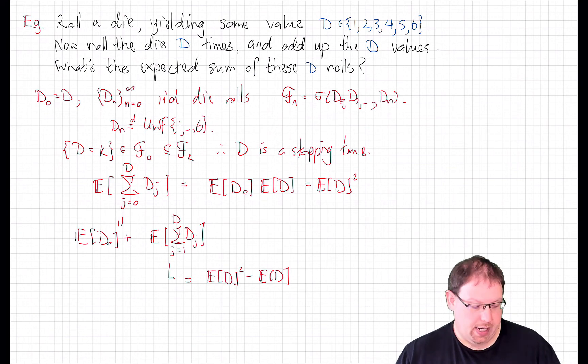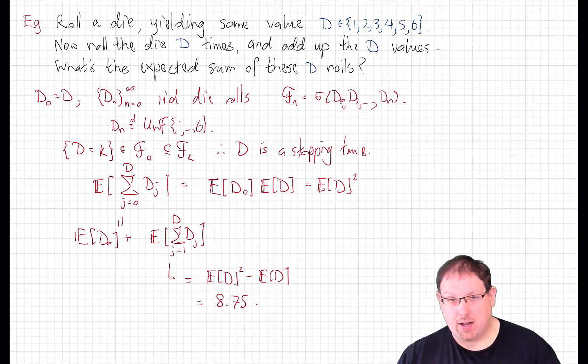And that's the quantity that we wanted. So we see that it is equal to the expected value of d squared minus the expected value of d. And now you can calculate that the expected value of d is 3.5, and so this comes out to 8.75 as the expected value of the sum. If you're very bored, it might be fun to do a bunch of trials of this experiment and see how accurate that turns out to be.